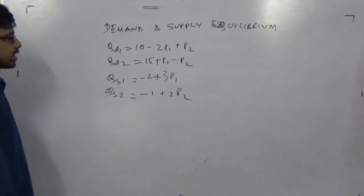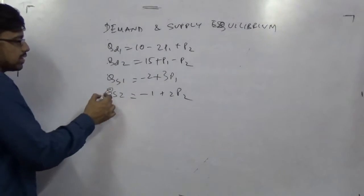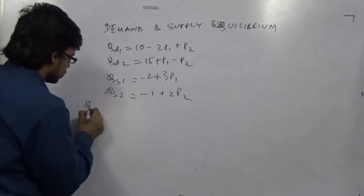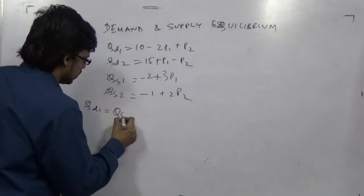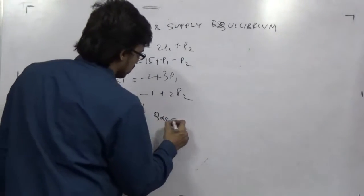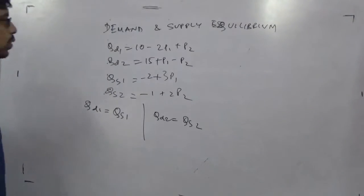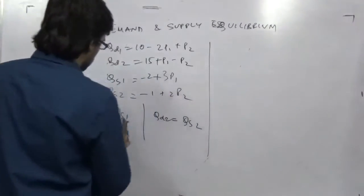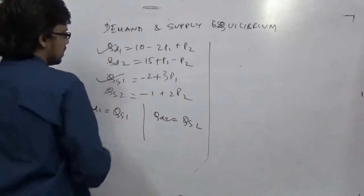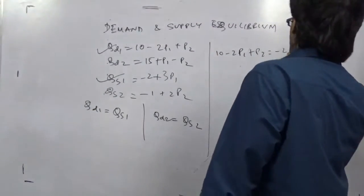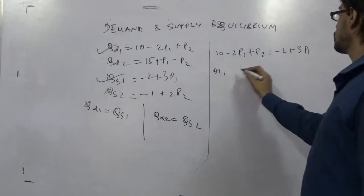Most of the cases, people get confused whether to add this demand and solve this supply or solve separately. No. The basic process is you have to do qd1 equals qs1 and qd2 equals qs2. That is first and third.